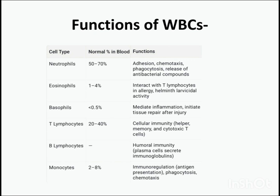Now coming to the functions of WBCs. Neutrophils, at 50-70%, perform adhesion, chemotaxis, phagocytosis, and release of antibacterial compounds. Eosinophils at 1-4% interact with T lymphocytes in allergy, have larvicidal activity. Basophils at less than 0.5% mediate inflammation and initiate tissue repair after injury. T and B lymphocytes at 20-40%: T lymphocytes act in cellular immunity as helper, memory and cytotoxic T cells; B lymphocytes help in humoral immunity by forming plasma cells that secrete immunoglobulins. Monocytes at 2-8% have roles in immunoregulation including antigen presentation, phagocytosis and chemotaxis.